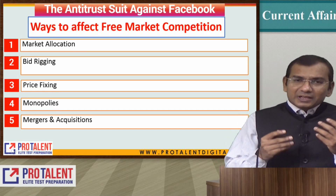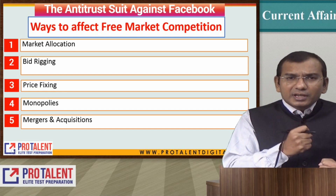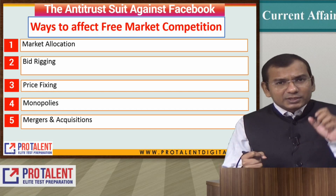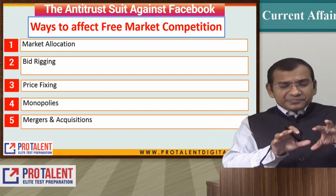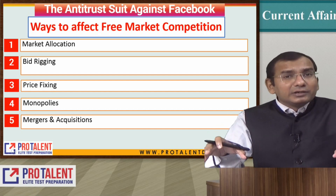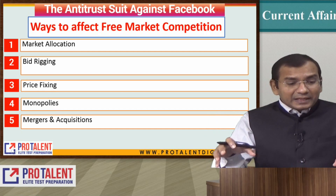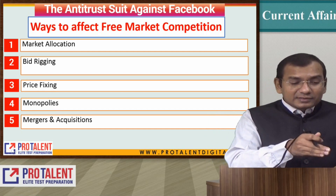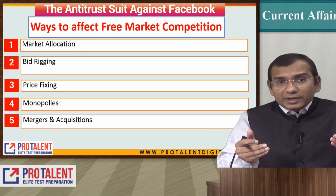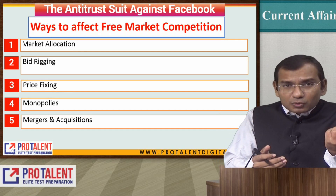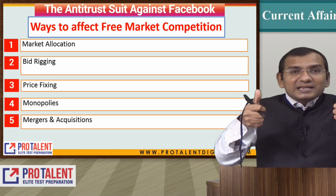The first is market allocation. For example, hypothetically, if Coca-Cola and Pepsi — dominant players in the soft drink market — agree that the Northern region belongs to Coca-Cola and the Southern region to Pepsi, that is cartelization. This market allocation stops other players from entering. And since Coca-Cola and Pepsi are not competing with each other in their respective regions, they may increase prices, which harms consumers like you and me.